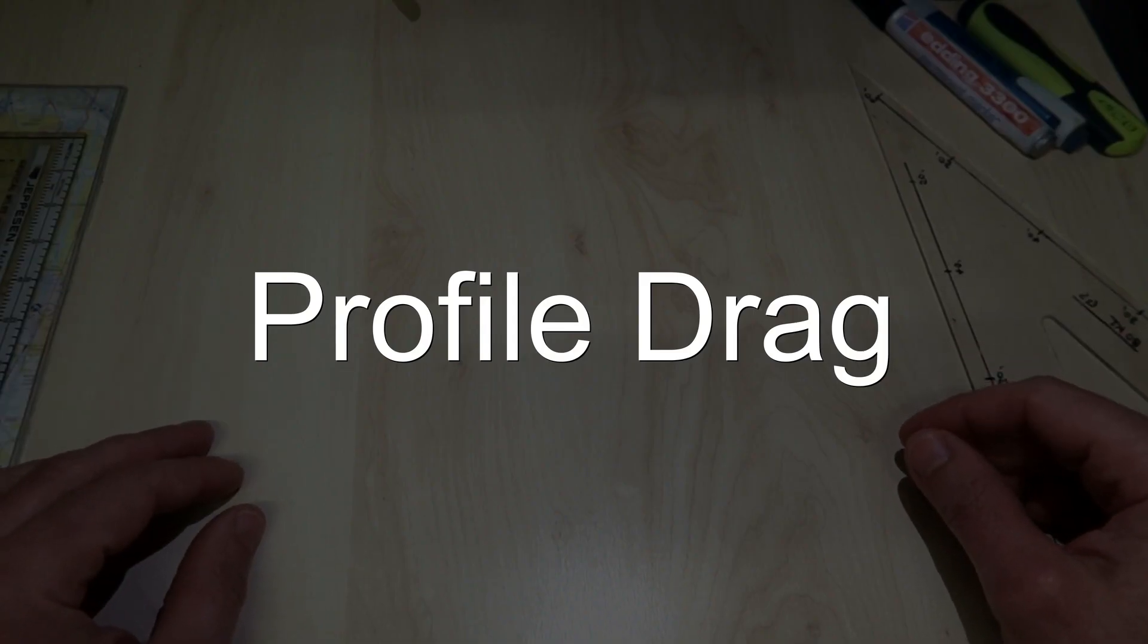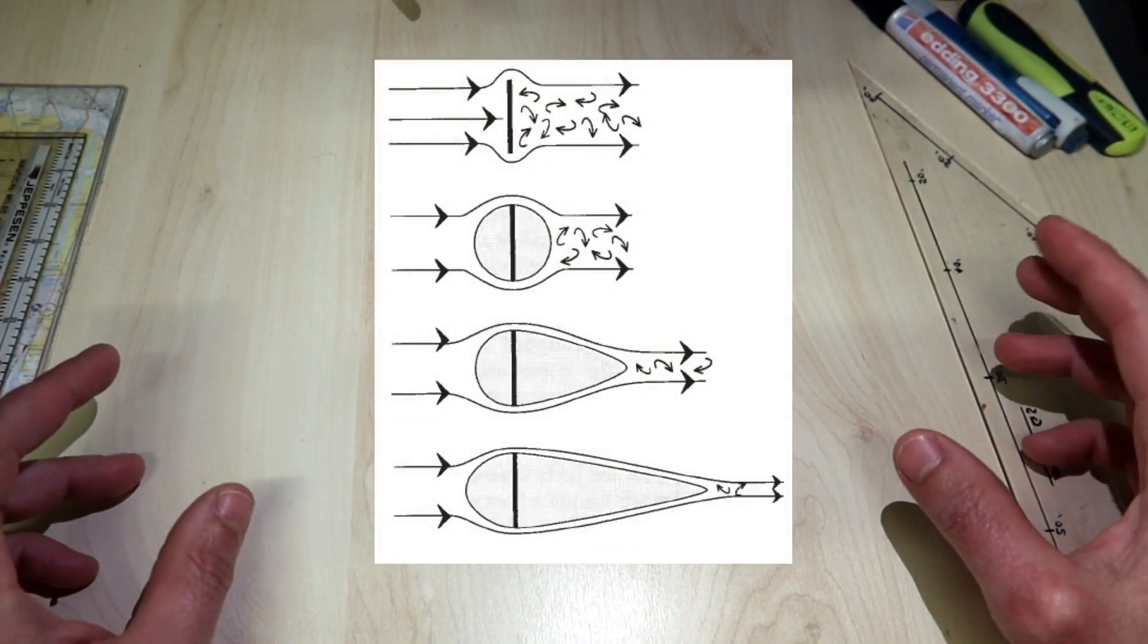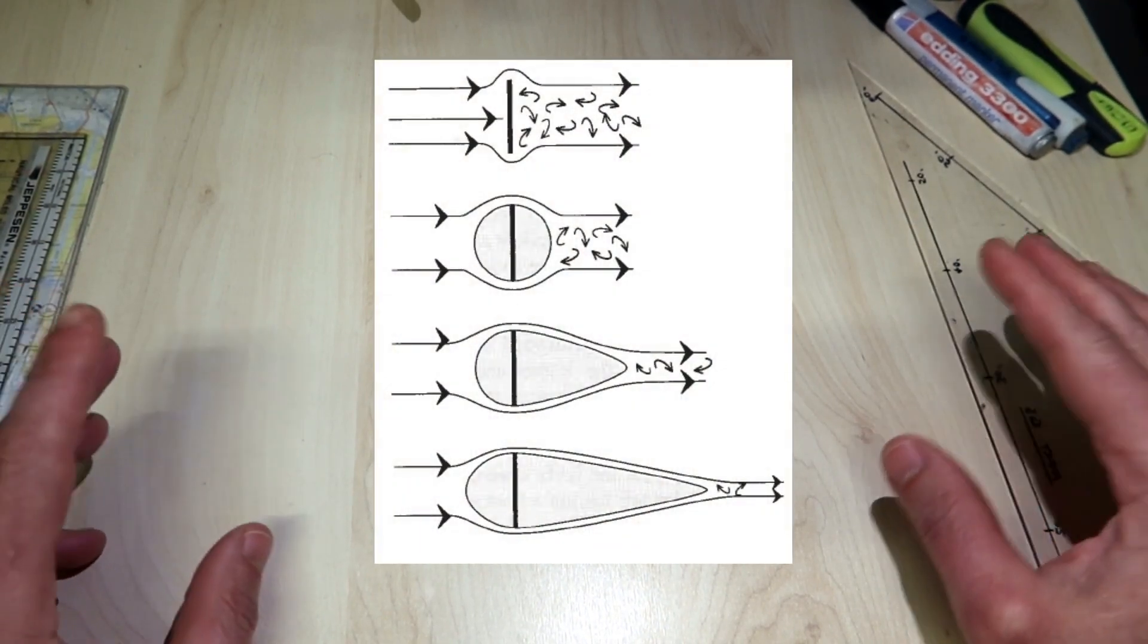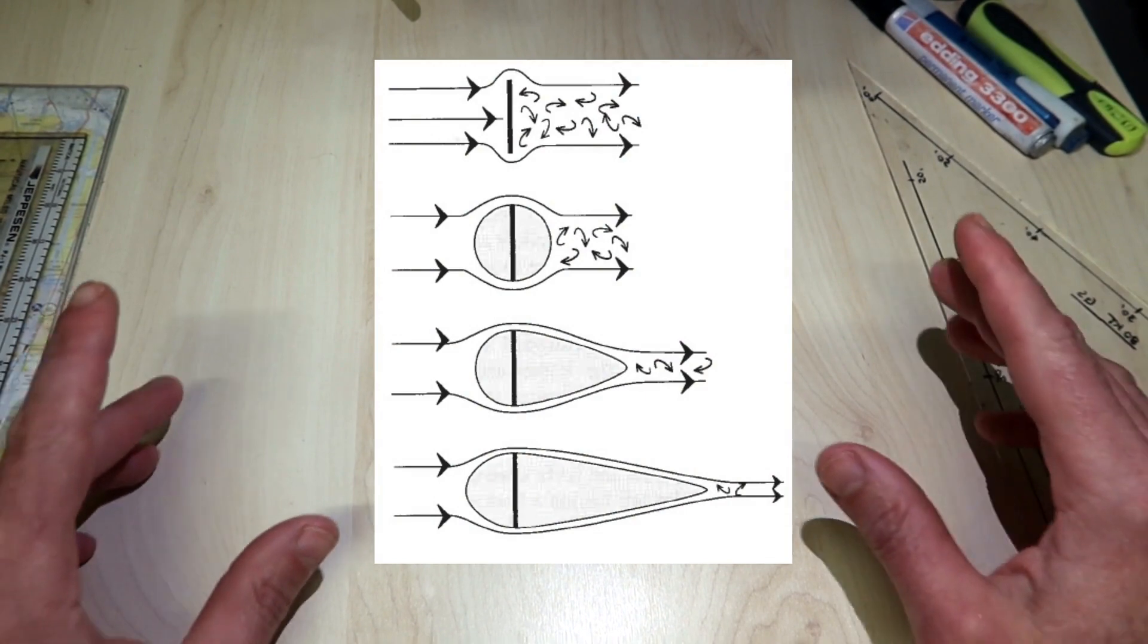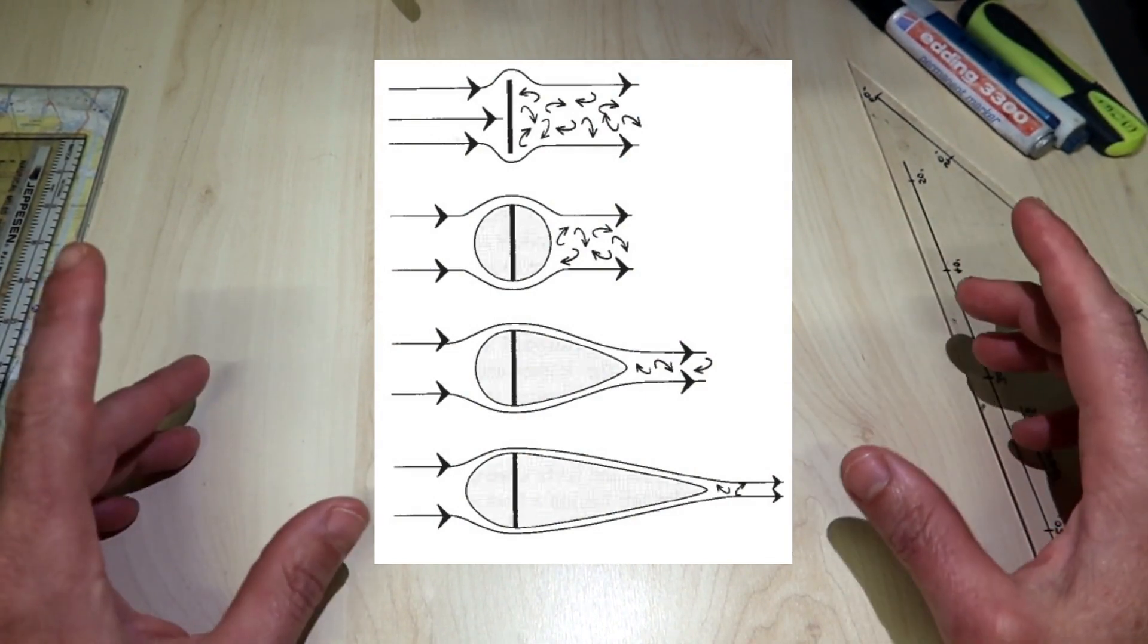Profile drag, sometimes known as rotor profile drag, is the drag contribution from the rotating rotor blade.